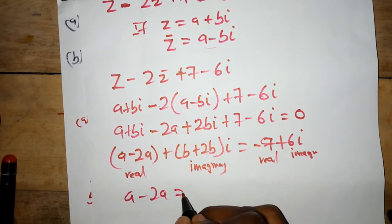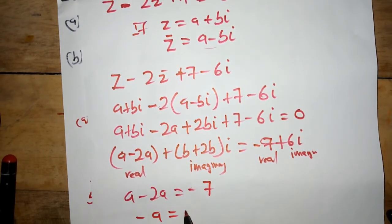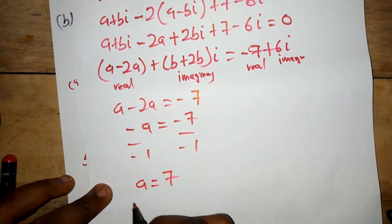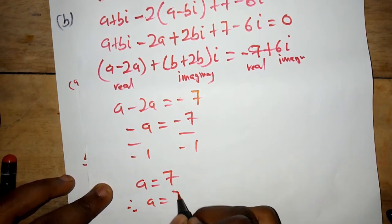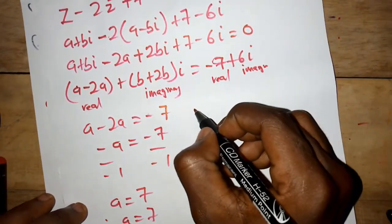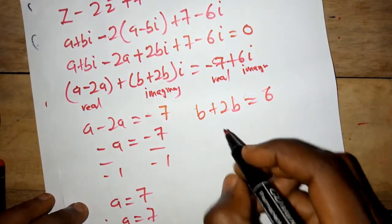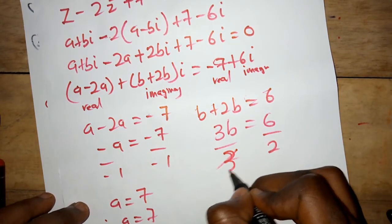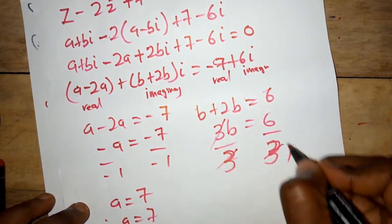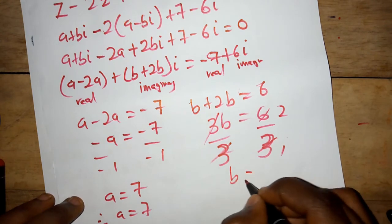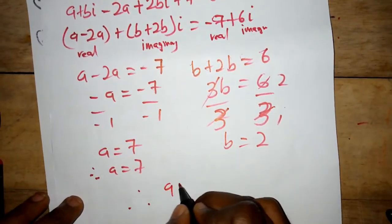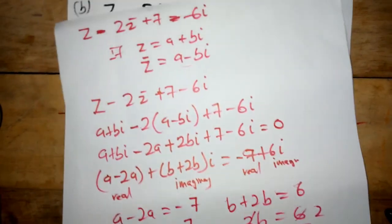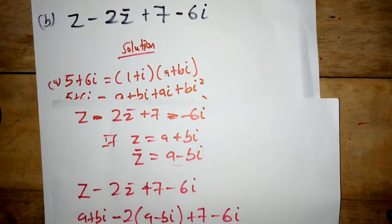From the real part: a minus two a equals negative seven, so negative a equals negative seven, giving a equals seven. From the imaginary part: b plus two b equals six, so three b equals six, dividing both sides by three gives b equals two. Therefore a equals seven and b equals two. Thank you very much for joining me and we'll meet again in another session.